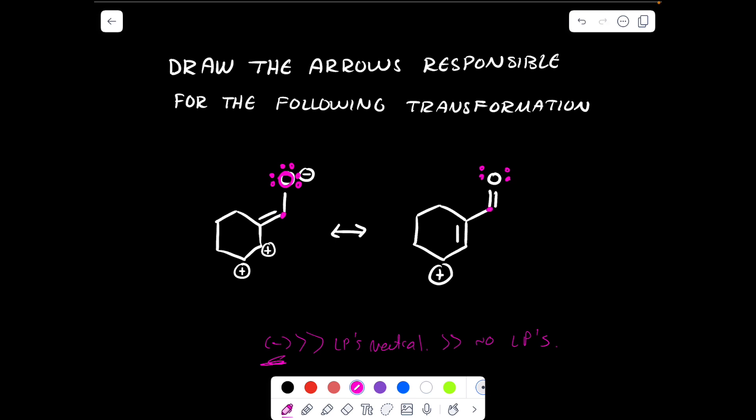So what do we do? We'll take one of these lone pairs two in, because we want a bond there, we want that bond to be formed there. And then what happens? Well, this cationic charge is no longer present in the final product, so these two electrons must rearrange and go over. Bada bing, bada boom, that is it, that's all.